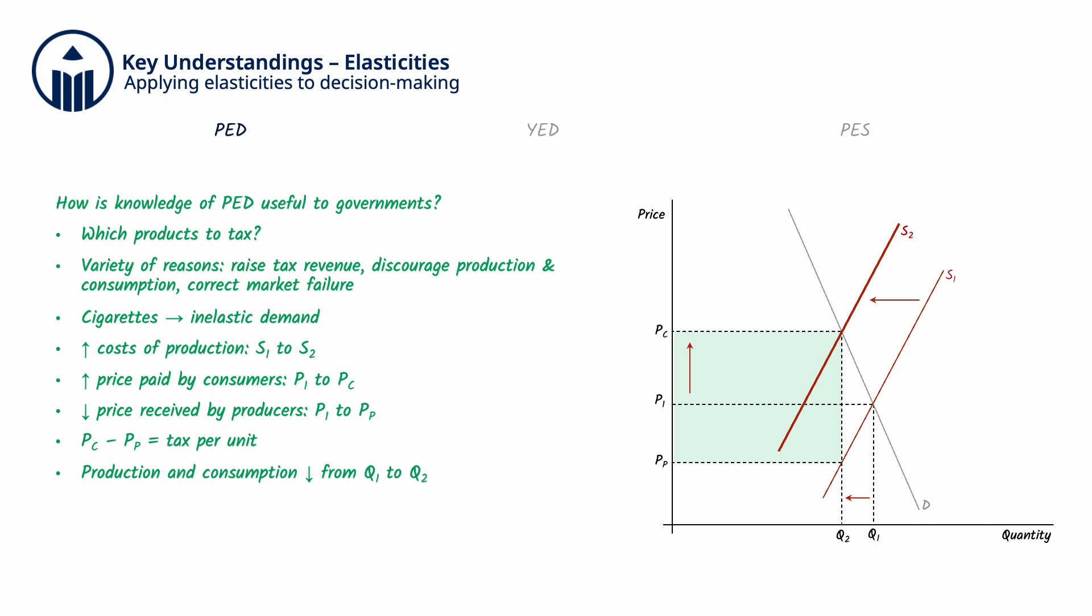Since demand is inelastic, the tax per unit has to be high enough to effectively discourage consumption.